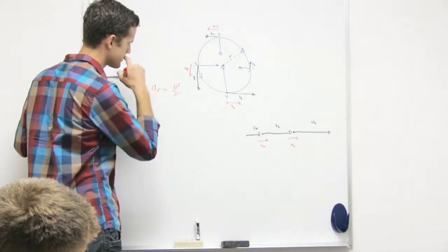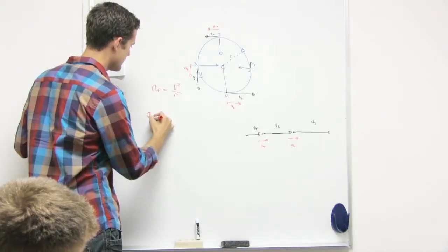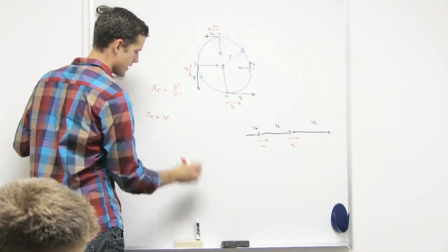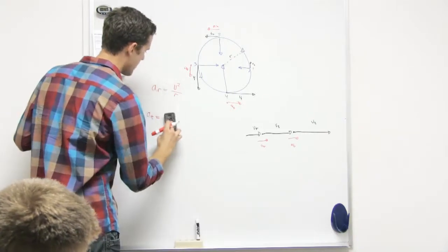So you're, let's think about this. So a_t equals omega, no not omega, equals alpha r.